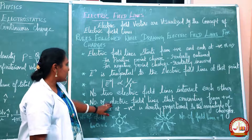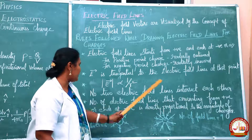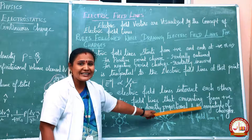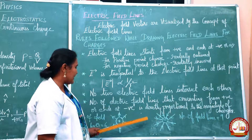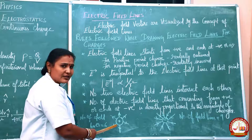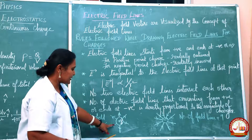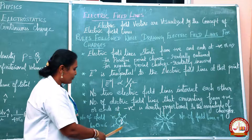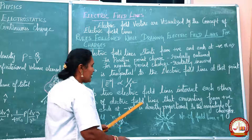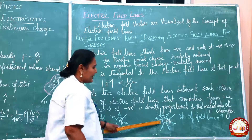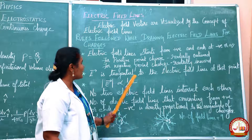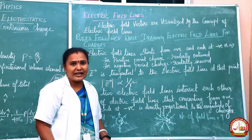The last rule: the number of electric field lines emanating from a positive charge or ending at a negative charge is directly proportional to the magnitude of the charge. The number of lines coming out gives you the magnitude of the charge. For a charge +q here there are 6 field lines, and for a charge of magnitude 2q the number of field lines is 9.